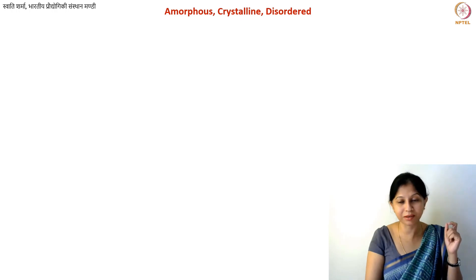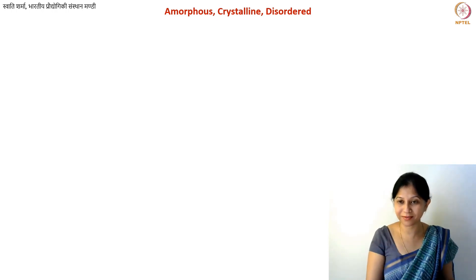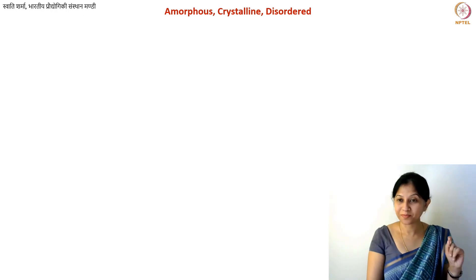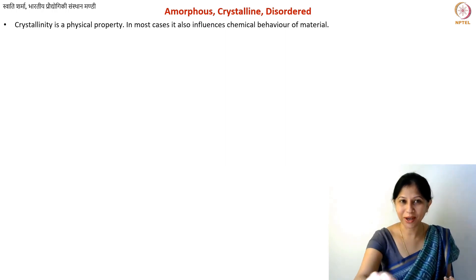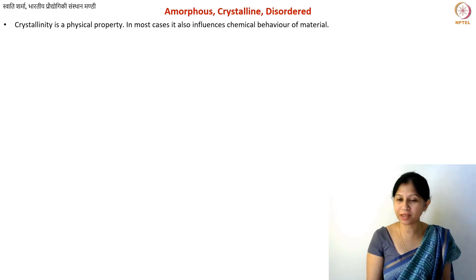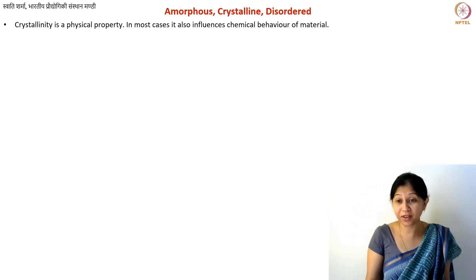What about materials that are not crystalline — are they always amorphous? When you learn about crystalline materials you also learn about amorphous materials. If I tell you to define an amorphous material, it's not easy — you might say something that shatters on breaking is amorphous, but that's not completely correct. So there are three definitions to consider: amorphous, crystalline, and disordered materials.